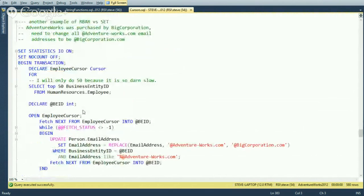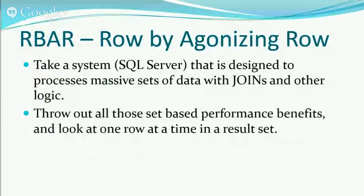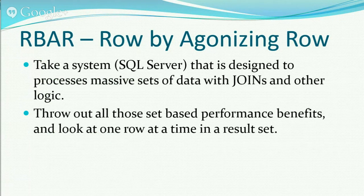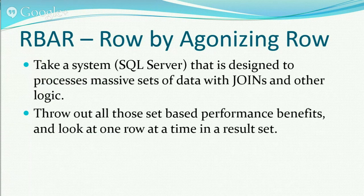The term for this is RBAR — Row By Agonizing Row. It means you're taking a system like SQL Server, designed to process massive sets of data with joins and other logic, and instead iterating one row at a time, not using what the database does really well. 'Agonizing' usually refers to how long it takes to process. Row by agonizing row.